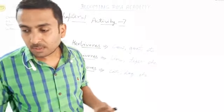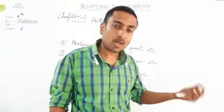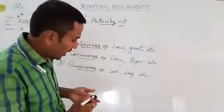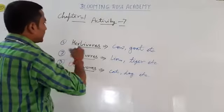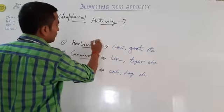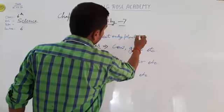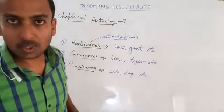See, place animals which eat only plants. There are many animals which eat only plants. Those animals are called herbivores. They eat only plants, and they are known as herbivores.